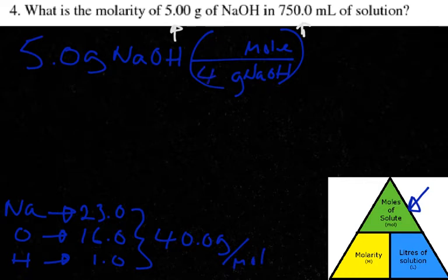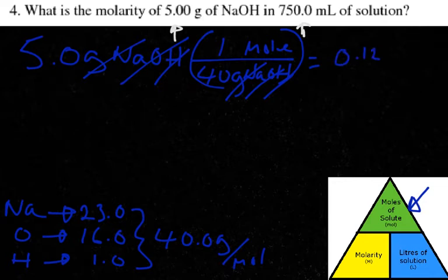40 grams for every mole goes there. What happens next? The grams of NaOH, grams of NaOH, grams of NaOH cancels out, and that should give us a mass of 0.125 moles. Now we move on. We have our moles now of solute.